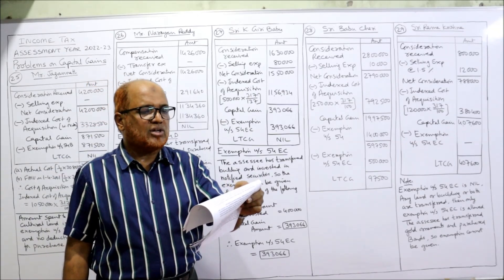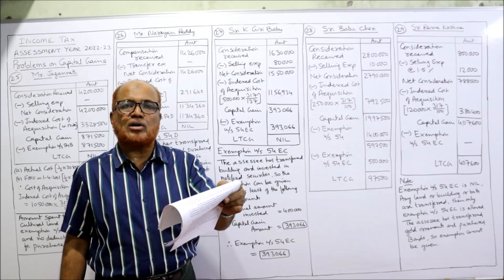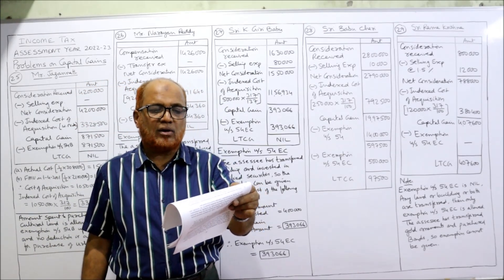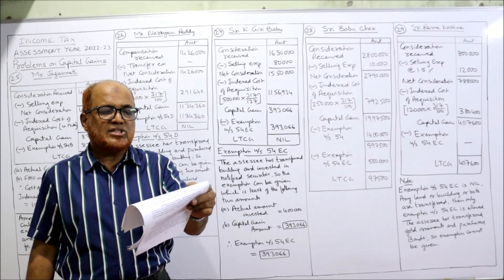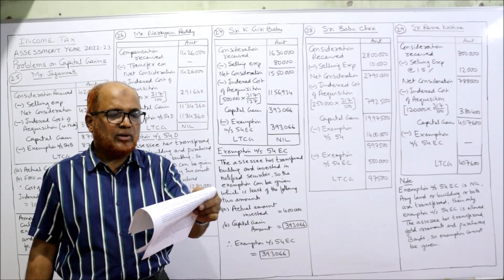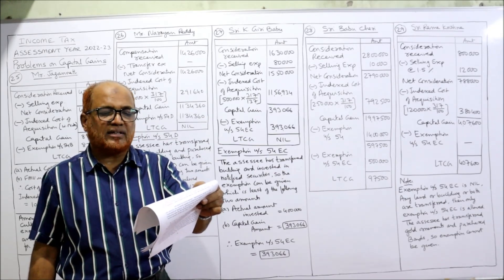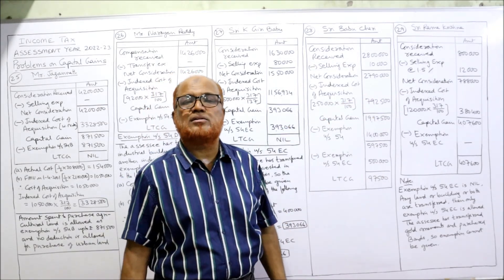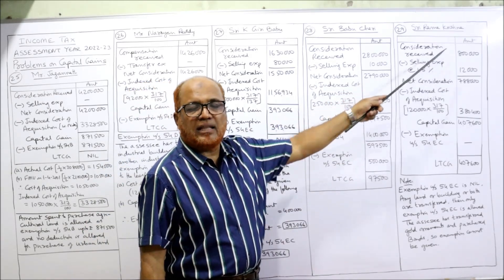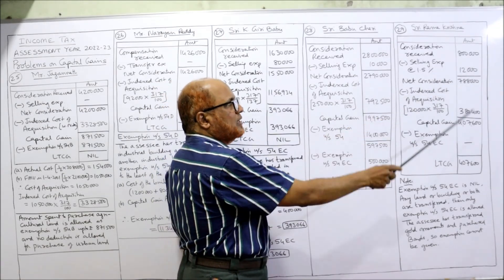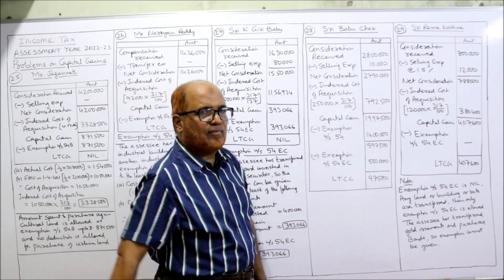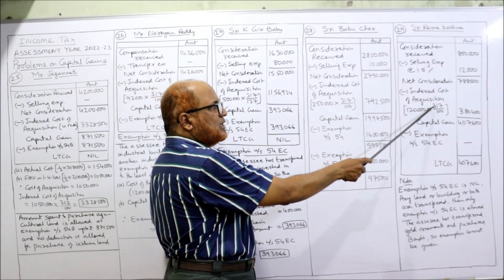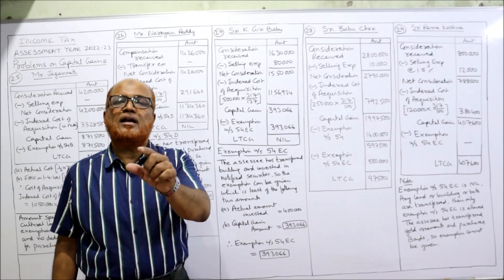Last and final problem — 29th. Sri Ramakrishna sold his gold ornaments for 8 lakh during the previous year. The cost was 1 lakh 20,000, 16 years ago. After selling the ornaments, within two months he invested 7 lakh in bonds of Unit Tessil Chemicals and Hydro Power Limited Mumbai, which are notified as specified securities under Section 54EC. Selling expenses are 1.5 percent — 1.5% of 8 lakh is 12,000. Net consideration = 7 lakh 88,000. Indexed cost of acquisition: 1 lakh 20,000 × 317 / 100 (the index number of the purchase year is 100) = 3 lakh 80,400.